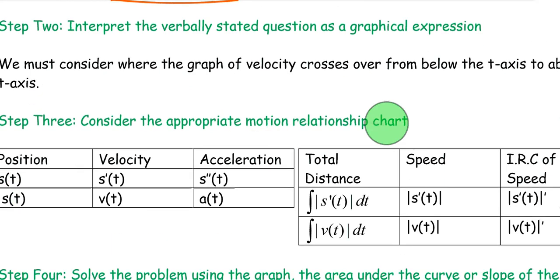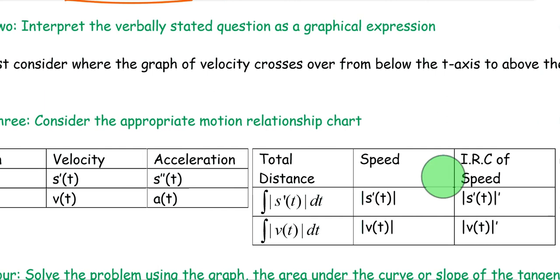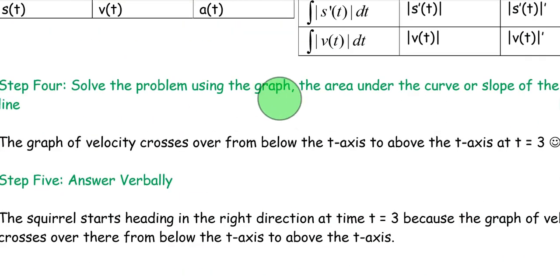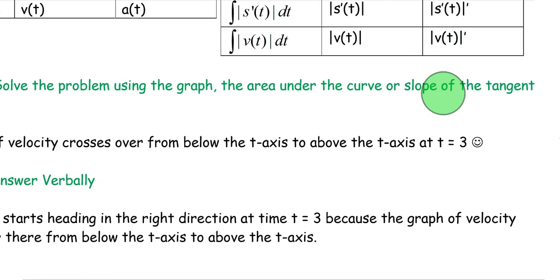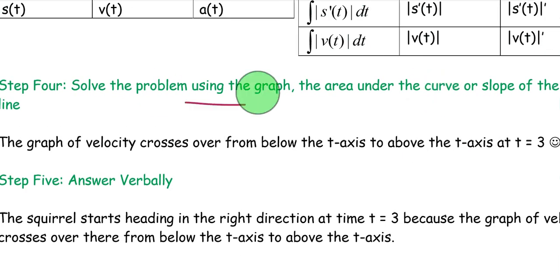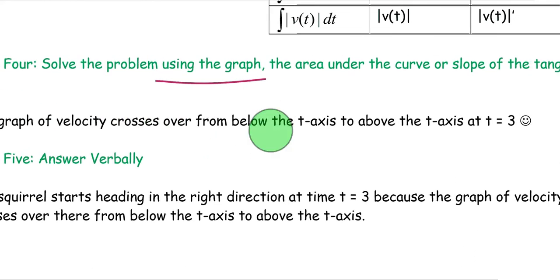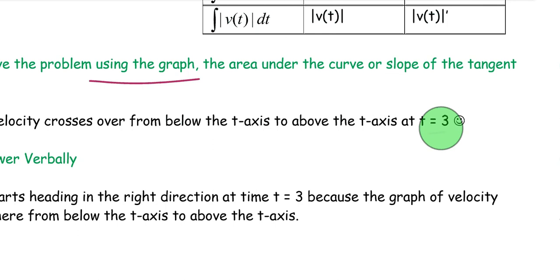Step three, consider the appropriate motion relationship chart. What are we actually asking about? We're asking about velocity. So we don't have to focus on this chart for right now. Step four, solve the problem using the graph, the area under the curve, or the slope of the tangent line. In this case, we'll just be using the graph. We don't have to do any of that other stuff. The graph of the velocity crosses over from below the t-axis to above the t-axis at t equals three.